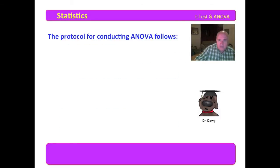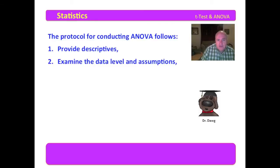The protocol for conducting ANOVA follows. Now every methodology has a protocol that you should follow. First thing you do is you provide the descriptives, then you examine the data level and the assumptions. So you need to look at the assumptions and examine them to make certain that the ANOVA assumptions are met. And if they are not met, then you declare that to the informed reader so that they can evaluate your findings accordingly. Conduct the ANOVA. Conduct the post hoc analysis as needed.